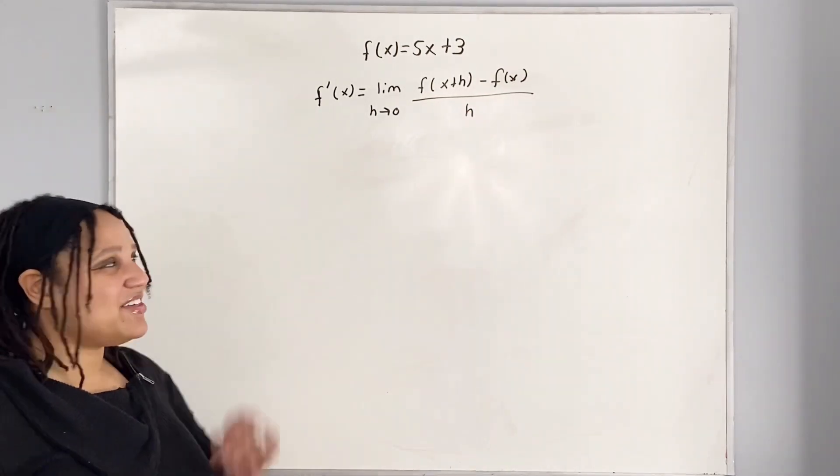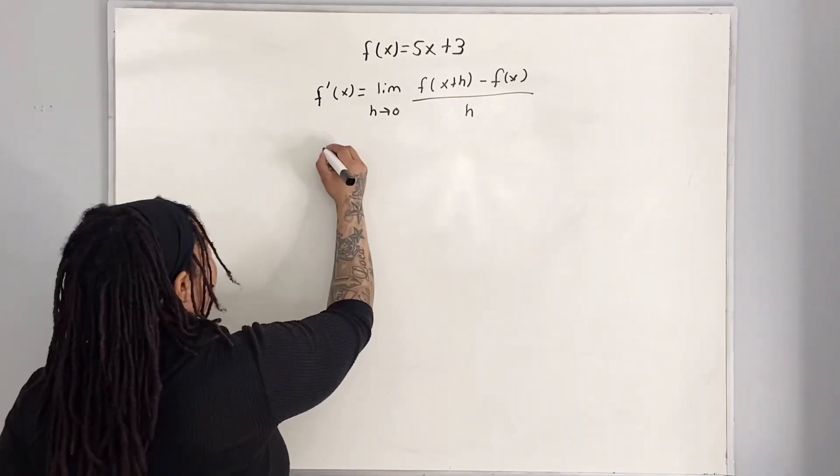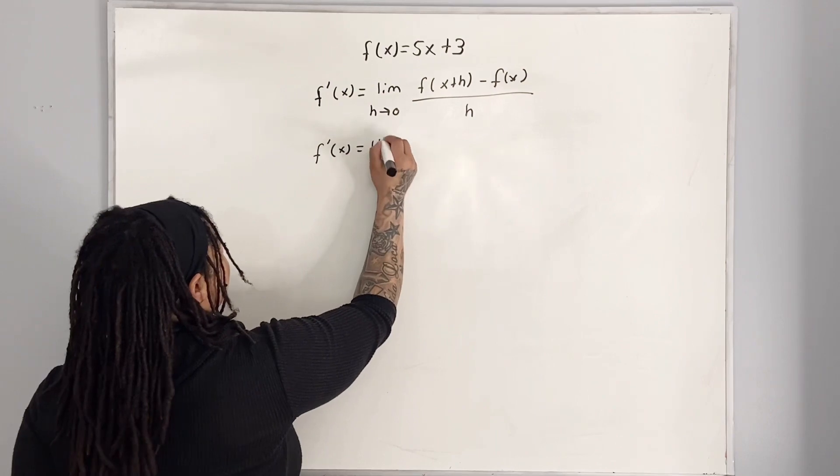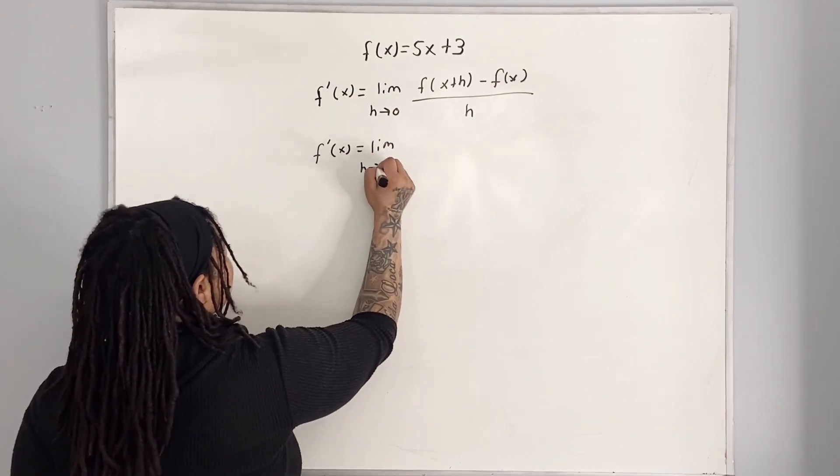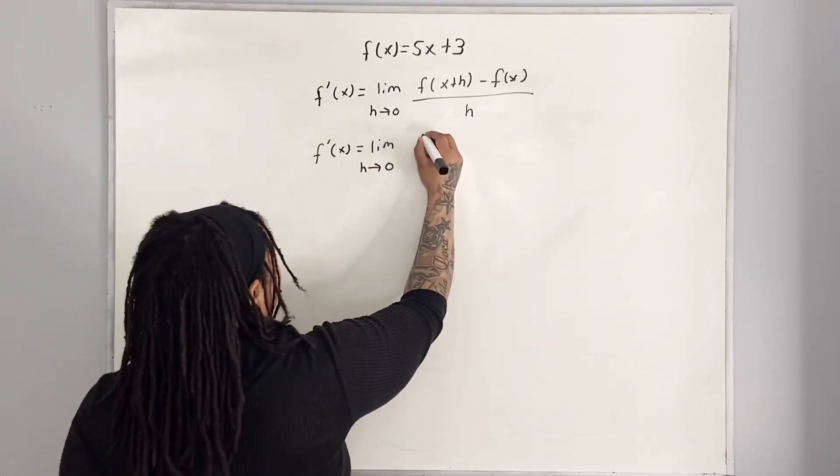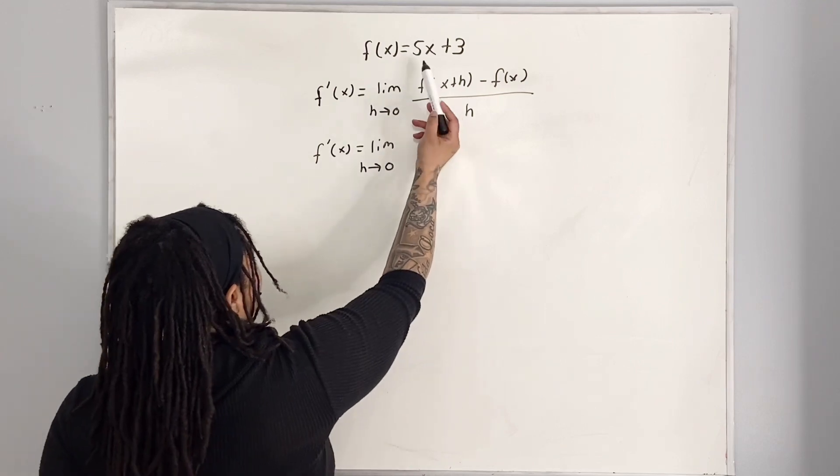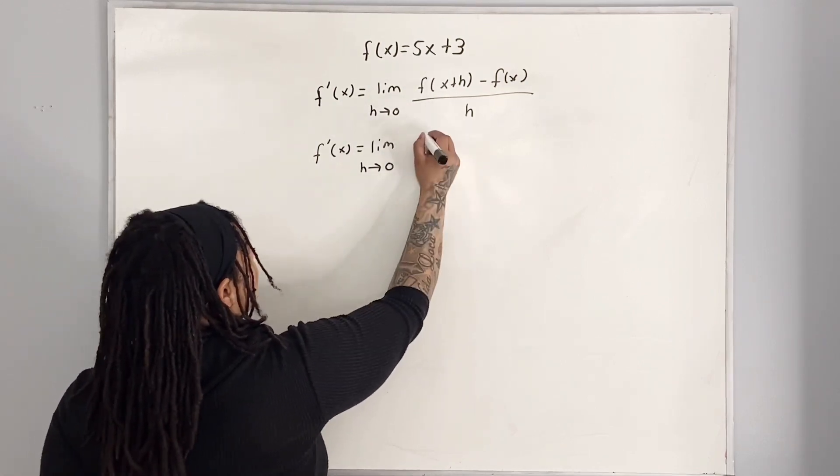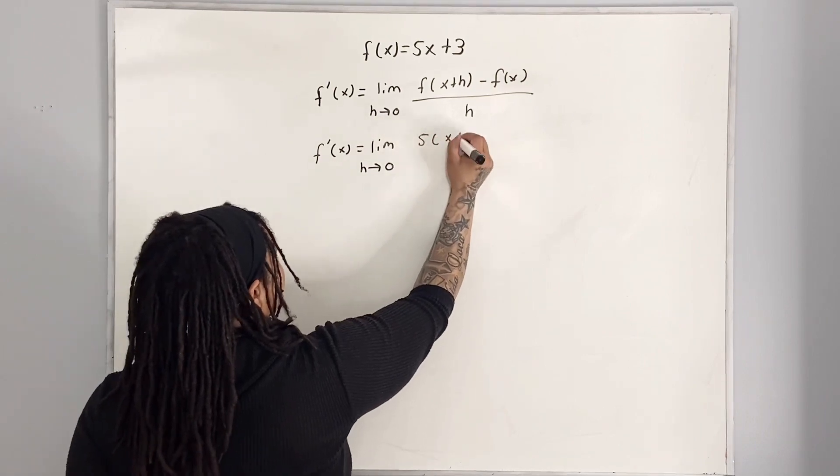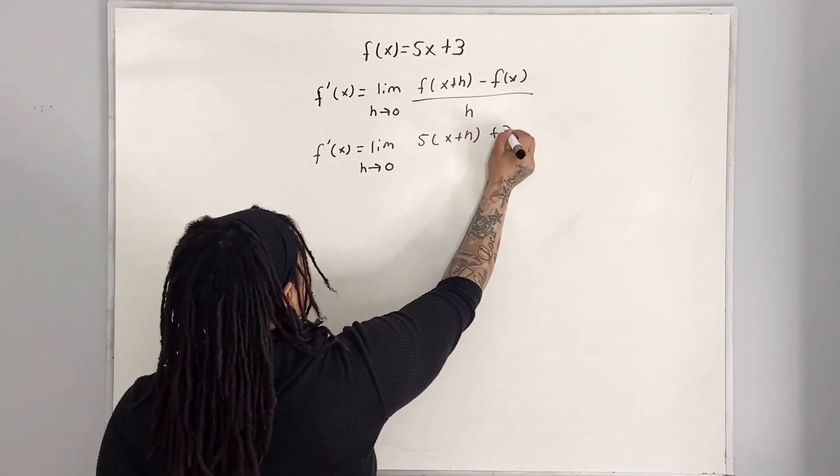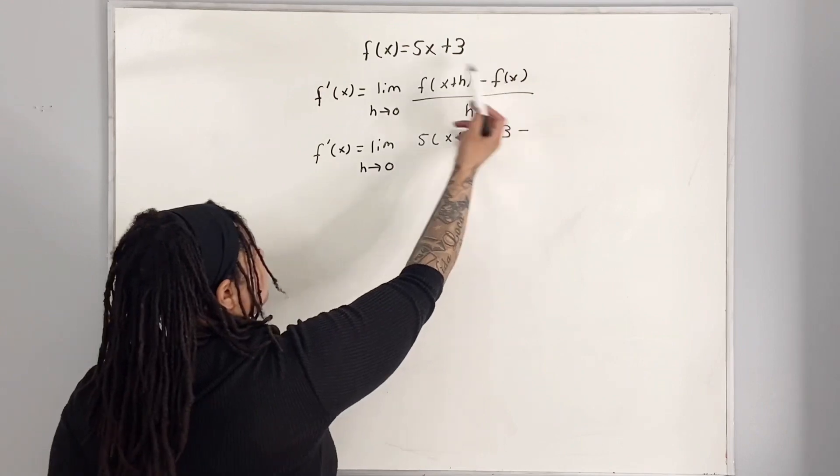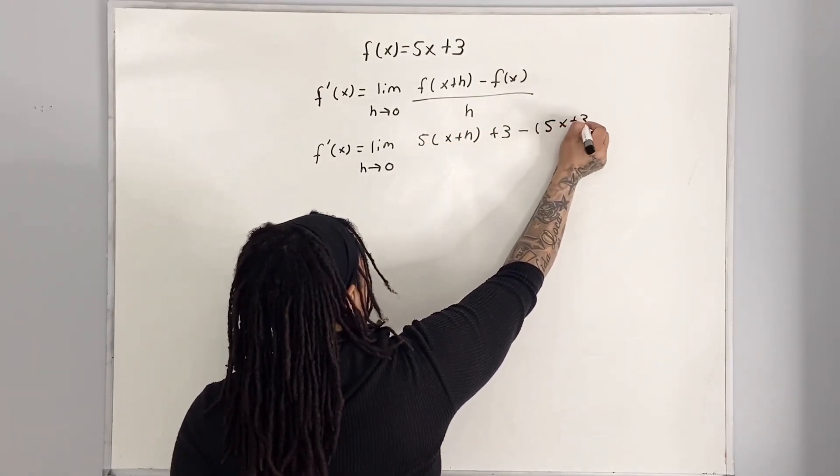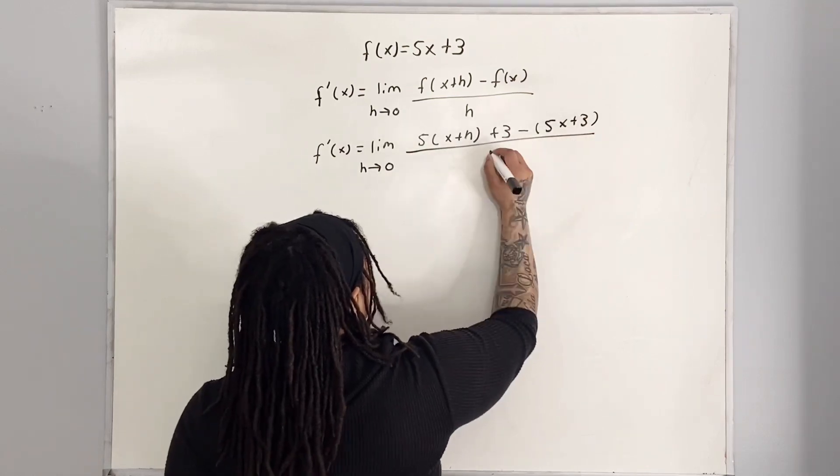So applying the definition we have f prime of x is equal to the limit as h approaches 0 of everywhere that I see an x I'm going to replace it with x plus h. So we have 5 times x plus h plus 3 minus our f of x. So our f of x is 5x plus 3 and we're going to put that all over h.